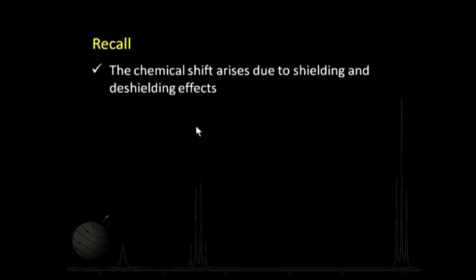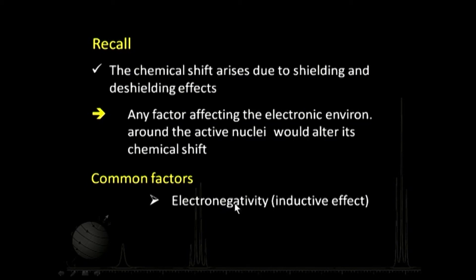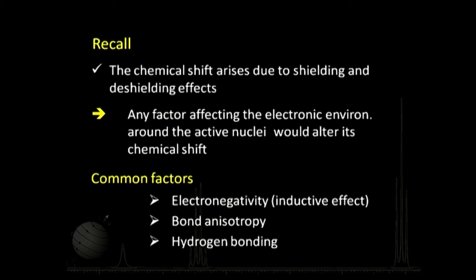Now let us talk about the factors affecting chemical shift, as this is a very elaborate subject. Chemical shifts arise because of the shielding and deshielding effects of electrons around the nucleus. Any factor which affects the electronic environment around the active nuclei would alter its chemical shift. The common factors are: electronegativity of attached atoms, bond anisotropy, and hydrogen bonding.